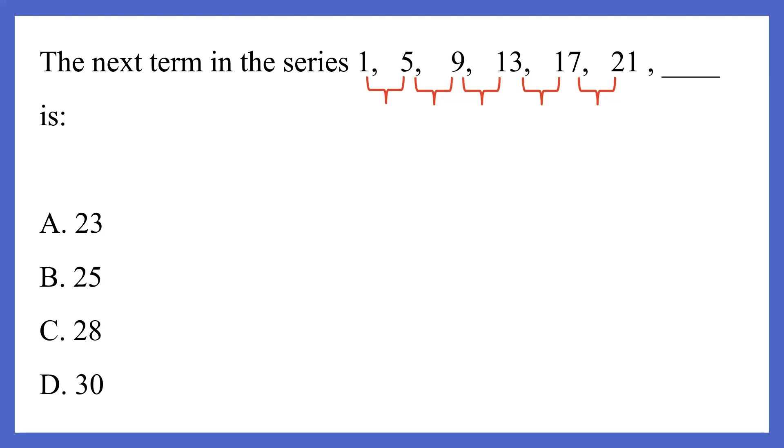So let's take the first two numbers, 1 and 5. The difference is 4. The next two numbers, 5 and 9, the difference is 4 again. 9 and 13, again the difference is 4. So as you can see, the pattern here is 4. 4 is added to every number to arrive at the next number.